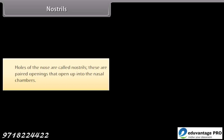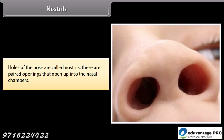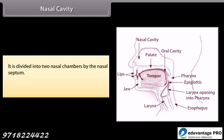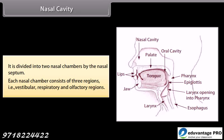Nostrils are the holes of the nose — paired openings that open up into the nasal chambers. The nasal cavity is divided into two nasal chambers by the nasal septum. Each nasal chamber consists of three regions: vestibular, respiratory, and olfactory regions.